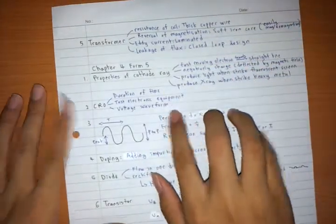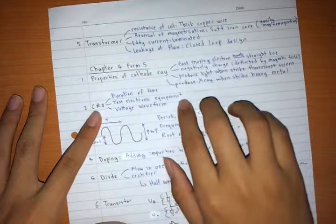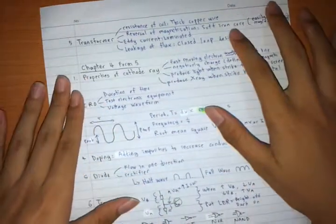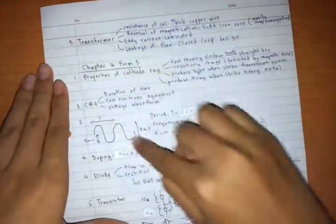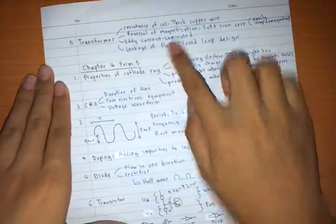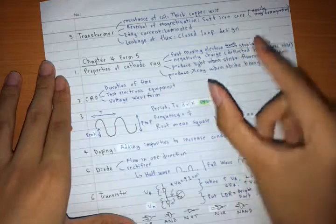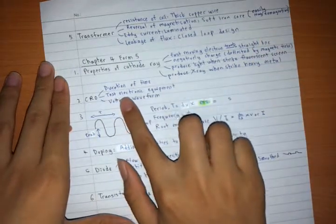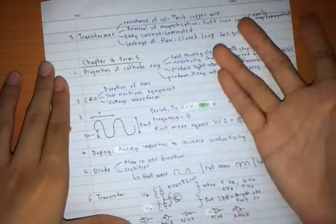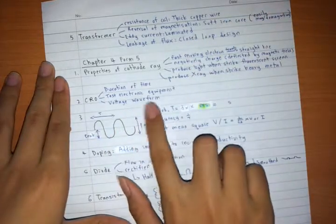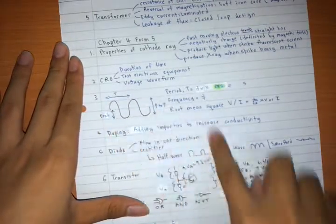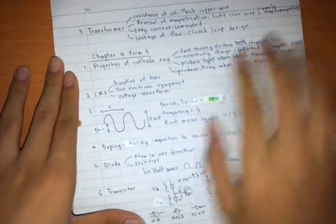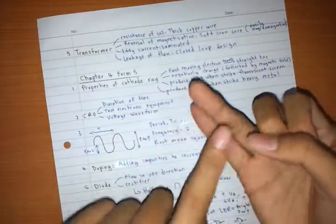Next thing is going to be your CRO, which is the cathode ray oscilloscope. It can do a lot of things, actually. One of them is measure the duration of time, where you just clap clap and then you see the waveform, they are like two high ones. You measure the distance between two high ones and you calculate their time, which we will cover later. The next thing is going to be test electronic equipment, which basically just tests and makes sure that it's still working. And then the last one is the voltage waveform. This is the greatest use of it. You can see the voltage waveform, and if it's AC, you'll see it like this.